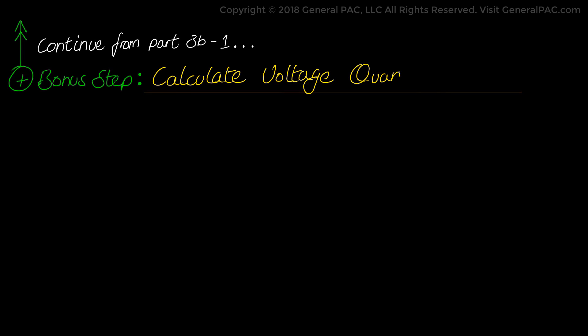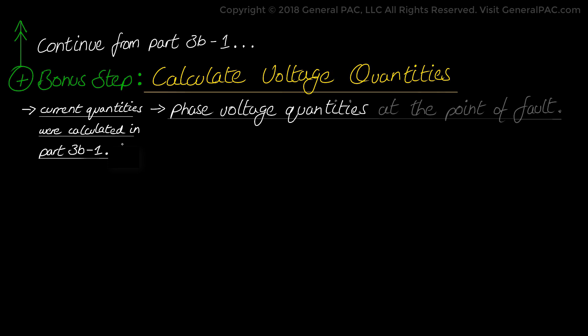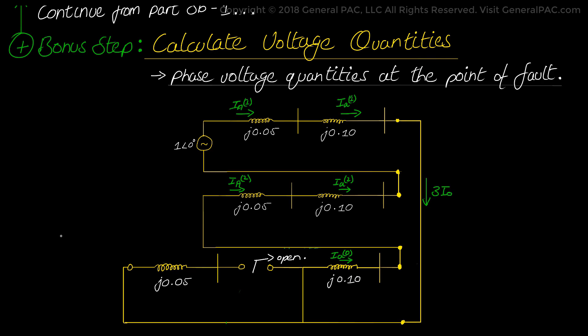Now let's continue where we left off in the previous part, Part 3b. In the bonus step, we will calculate the voltage quantities. In the previous section for Part 3b, we calculated the phase current quantities for a single line to ground fault on the 13.8 kV system. In this bonus step, we will calculate the phase voltage quantities at the point of the fault on the 13.8 kV system, using a very similar process.